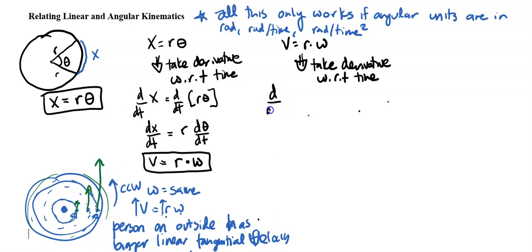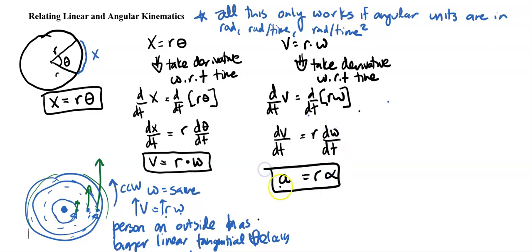Let's do it. So d/dt of v equals d/dt of r omega. So we have dv/dt equals, this is r we can pull out, times d omega dt. And again, we can pull r out because that is a constant. That is not changing at all. So dv/dt is just acceleration. That's linear acceleration. r is r. d omega dt is just angular acceleration. So a equals r times alpha.